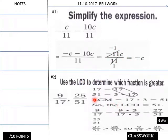Use LCD for these: 9/17ths and 25/51st. So what do we do here? 51 is 3 times 17. We have a common factor here of 17.